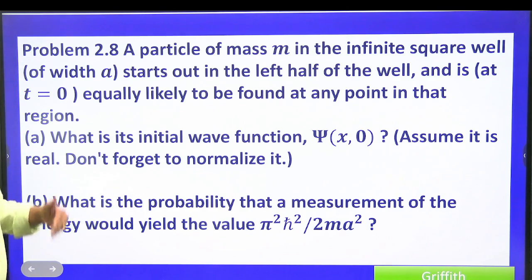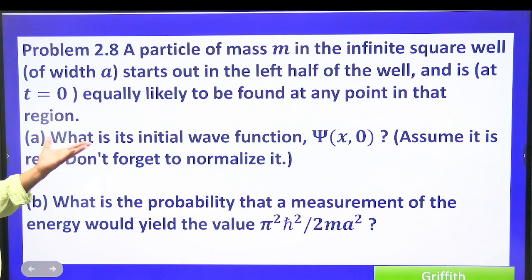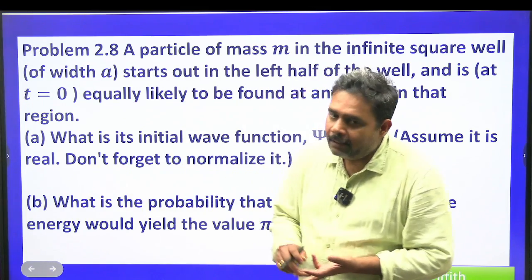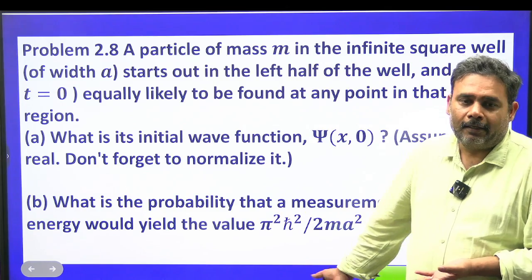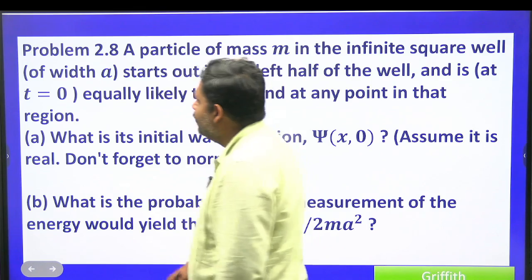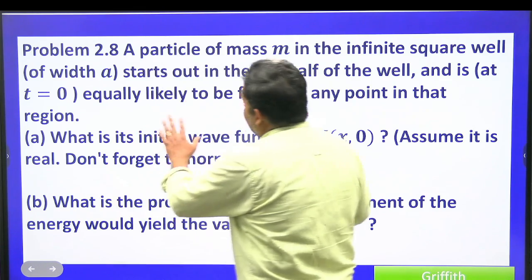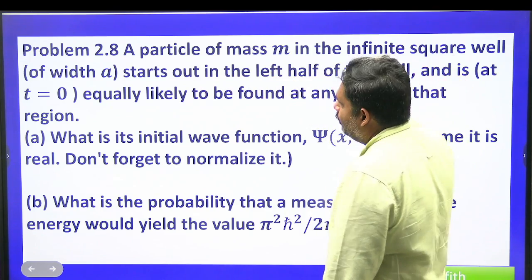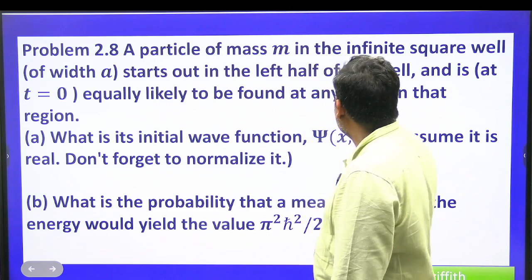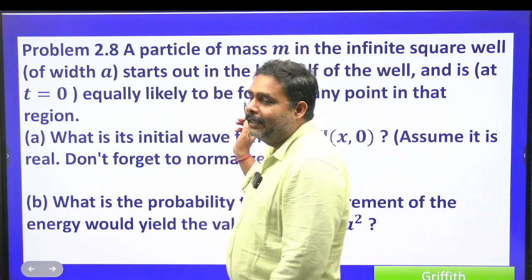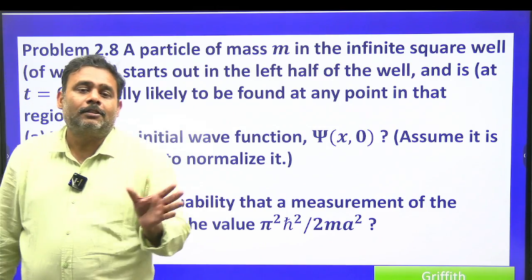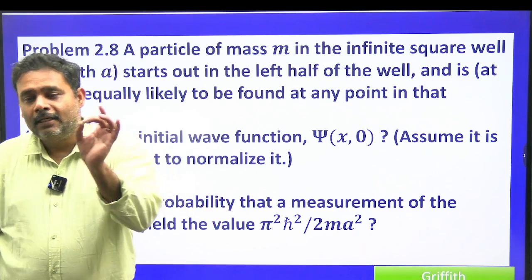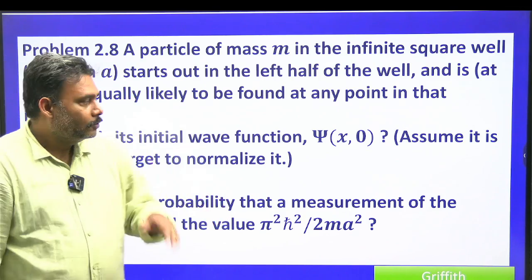To solve this problem, we first define ψ according to postulate one, then go to postulates two and three. The key statement is: a particle starts in the left half of the box and is equally likely to be found anywhere there — meaning the probability of finding the particle in the left half is basically one.